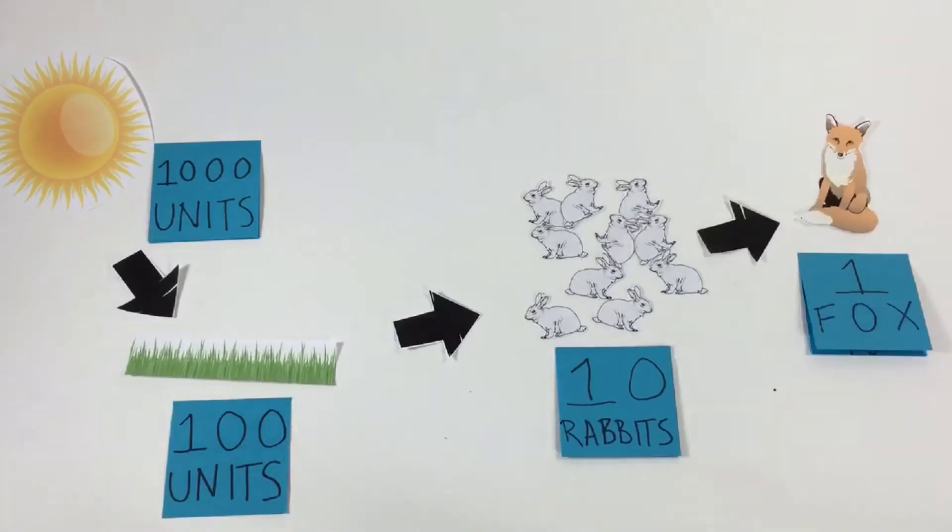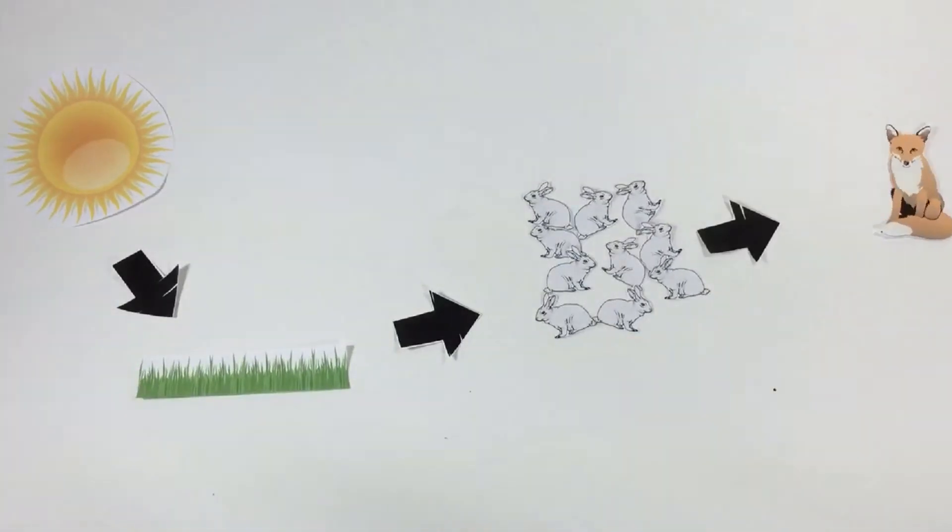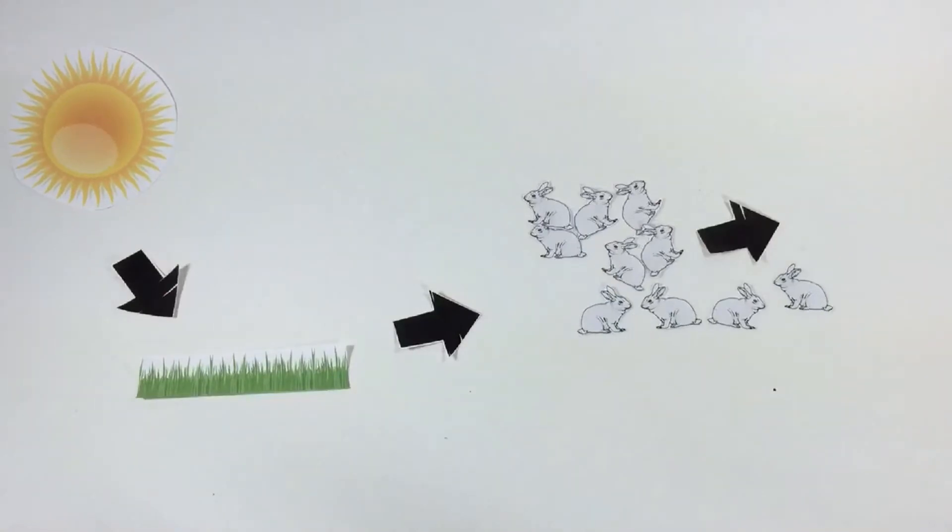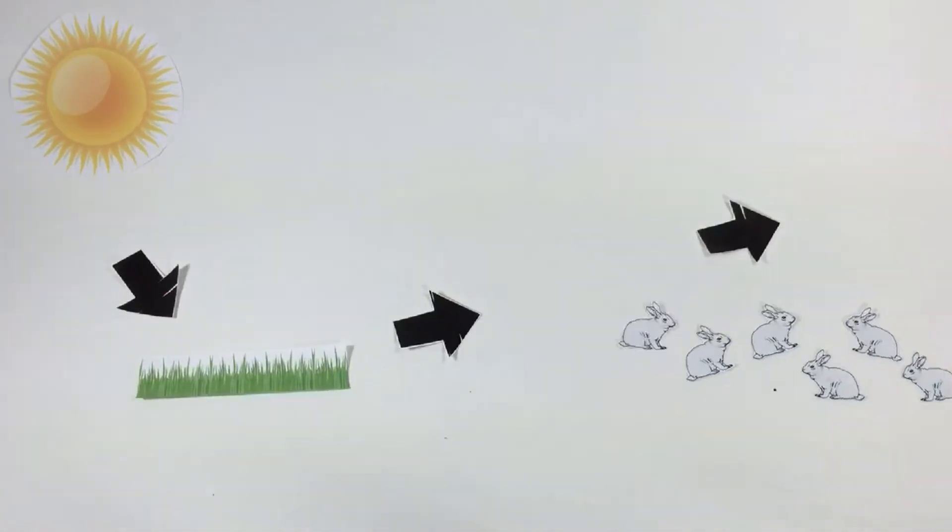Finally, those 10 rabbits can support just one fox. Being on the top is precarious. You need a lot of levels below you to survive.